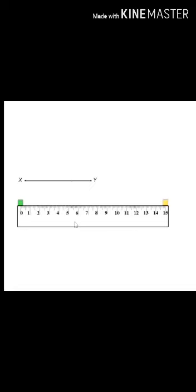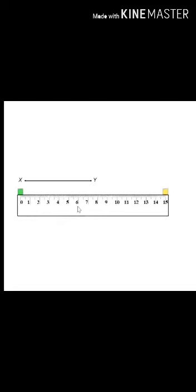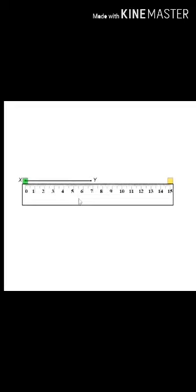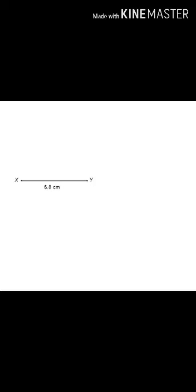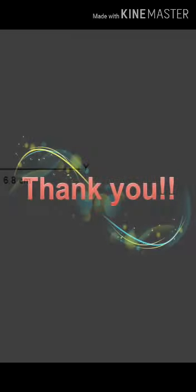Now, let us see the length of the line segment XY. Again, place the ruler just below the line segment. The zero mark at point X and other end Y reads as 6.8 cm.